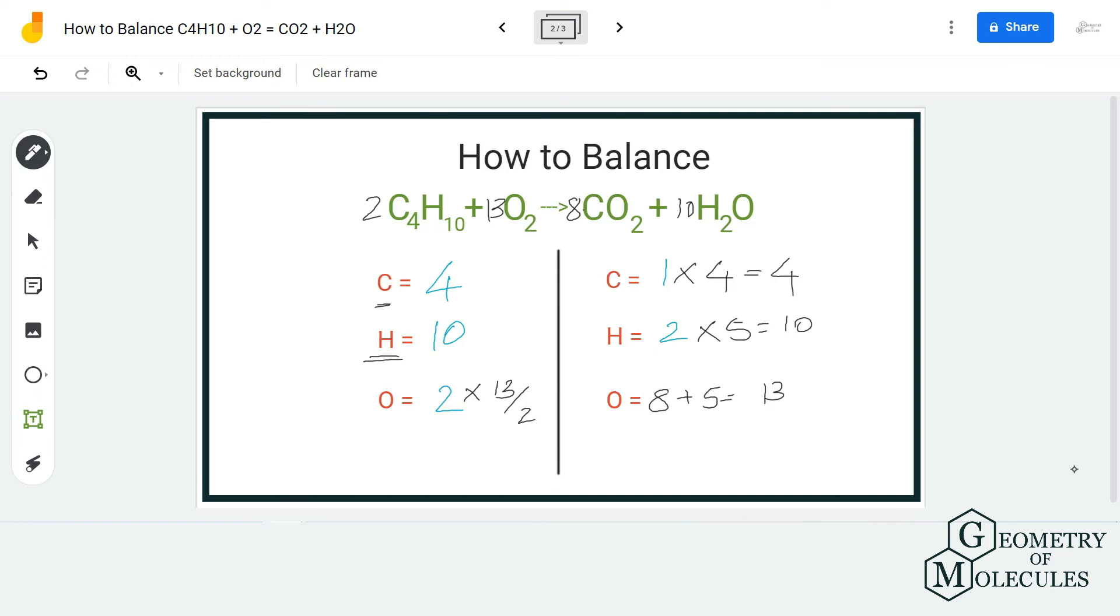So you can put 2 before C4H10 and there will be a 2 before this one as well, but as these two will cancel up we'll have 13 O2. Instead of 4 over here we'll have 8 CO2 and instead of 5 over here we will have 10 H2O. So basically we have multiplied this entire equation by 2 and as a result this is the balanced equation for the butane combustion.